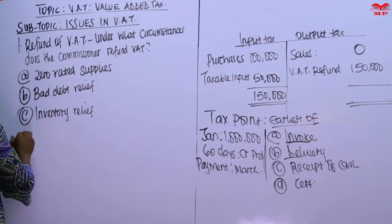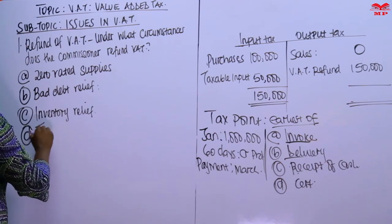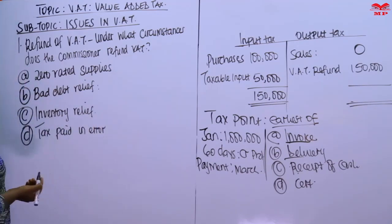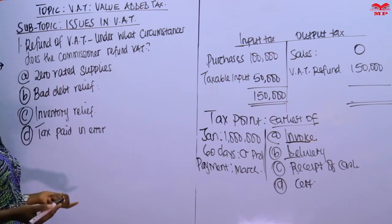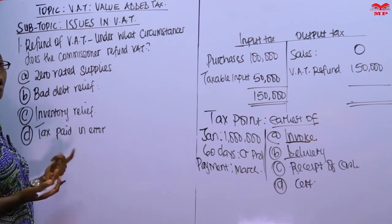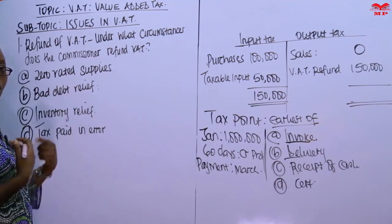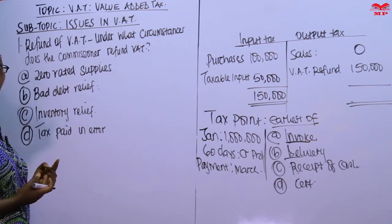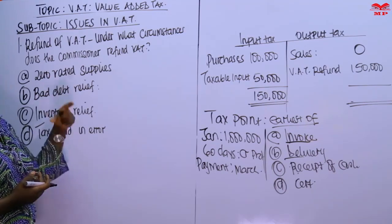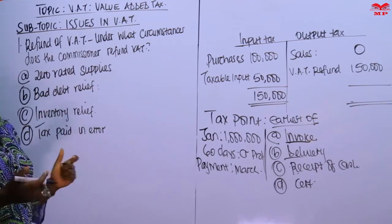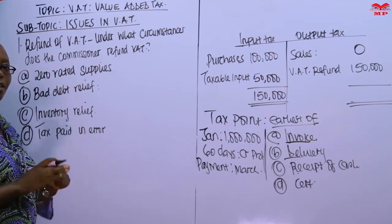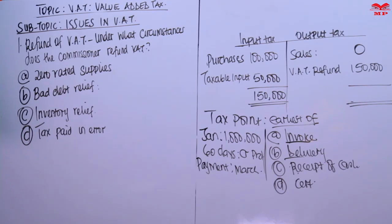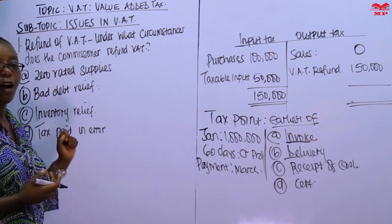You also get a refund when tax has been paid in error. For example, if there was an arithmetical mistake in computing the tax, or if you used the wrong rate and therefore overpaid, you can request relief of error or mistake. In VAT, the taxpayer prepares the return — the VAT account — so if any mistake was made in that preparation, you request the commissioner to allow you to correct it.